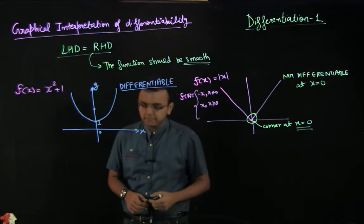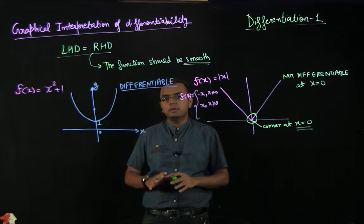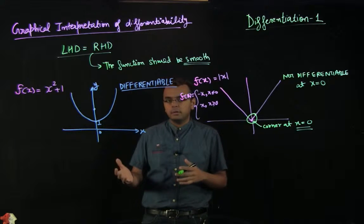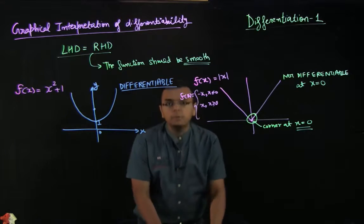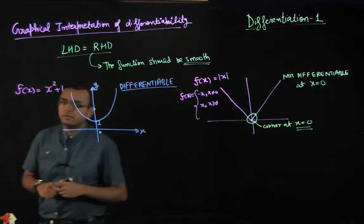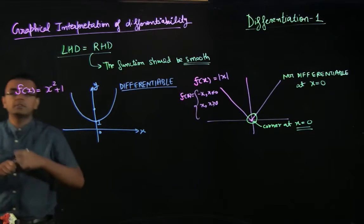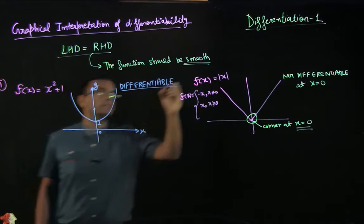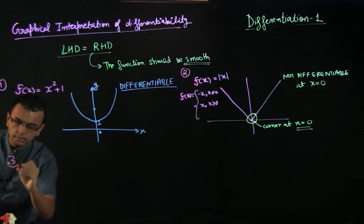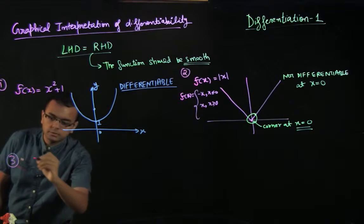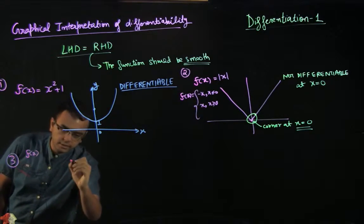Let us quickly take a few more examples. We will not write function definitions for them — I will just sketch them visually so that you can appreciate what kind of functions are differentiable and what kind are not. So the graph of f(x) is something like this.